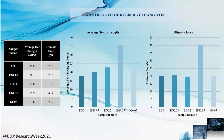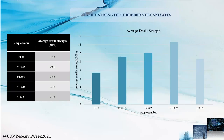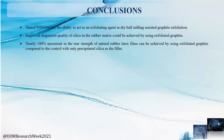When analyzing the tear strength test results, with increased amounts of exfoliated graphite, the tear strength of the final rubber vulcanizates gradually increased. Similar results were observed in the tensile strength test results as well. After analyzing all the test results, we can conclude that Tamol 9104 has the ability to act as an exfoliating agent in dry ball milling-assisted graphite exfoliation, and improved dispersion quality of silica in the rubber matrix can be achieved using exfoliated graphite. Nearly 100% increment in tear strength can be achieved using exfoliated graphite compared to using only tamol-dispersed silica as the filler.